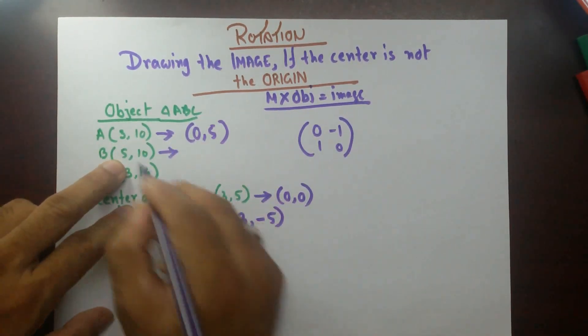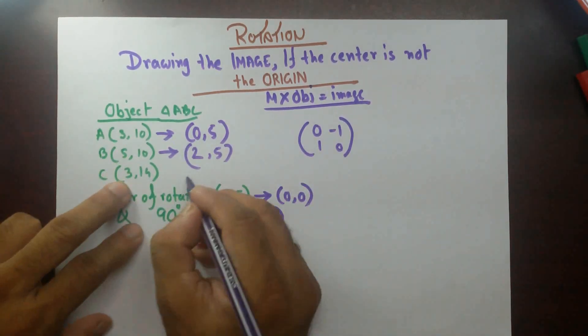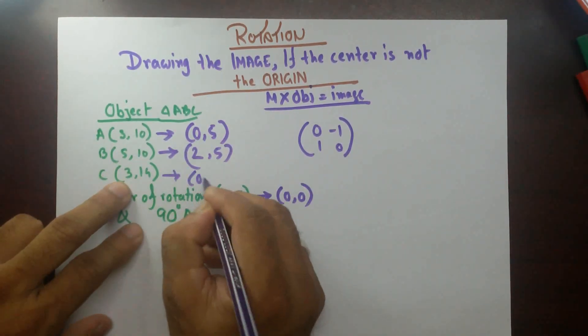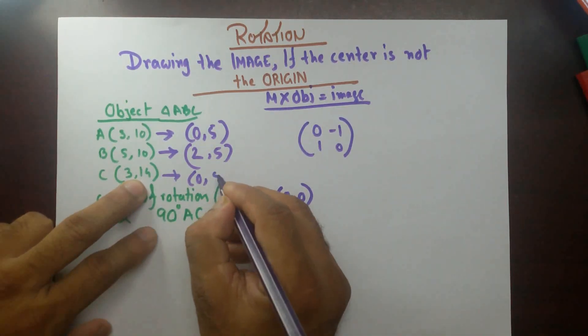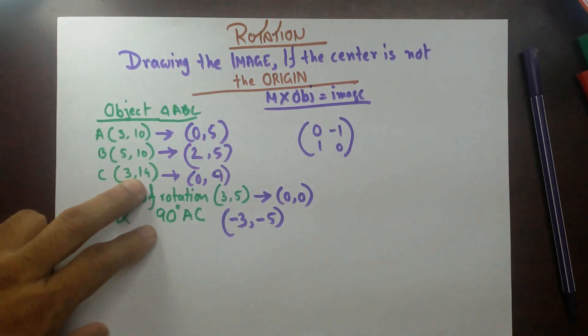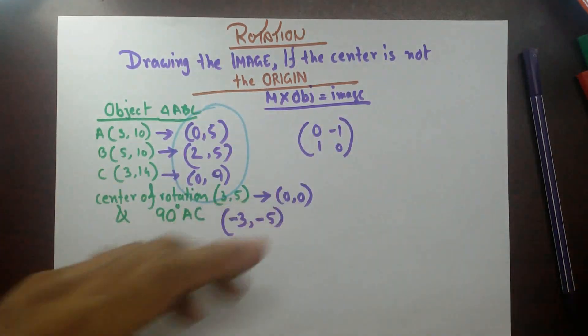Now, over here, this one is 2 and 5. Over here, it's 0 and then 14 minus 5 is 9. So, this is my new coordinates of the object.